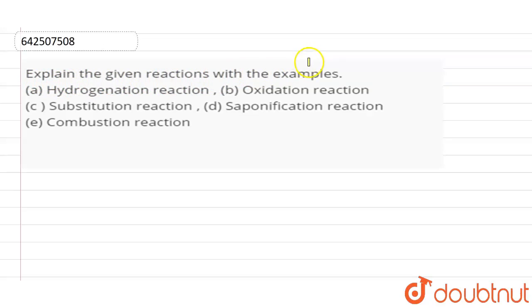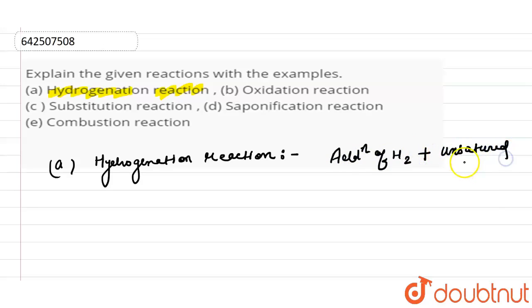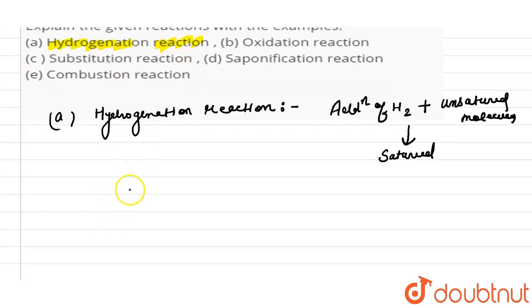First, we explain hydrogenation reaction. Hydrogenation reaction is the reaction which involves the addition of hydrogen to any unsaturated molecule, which makes it saturated. This is known as hydrogenation.